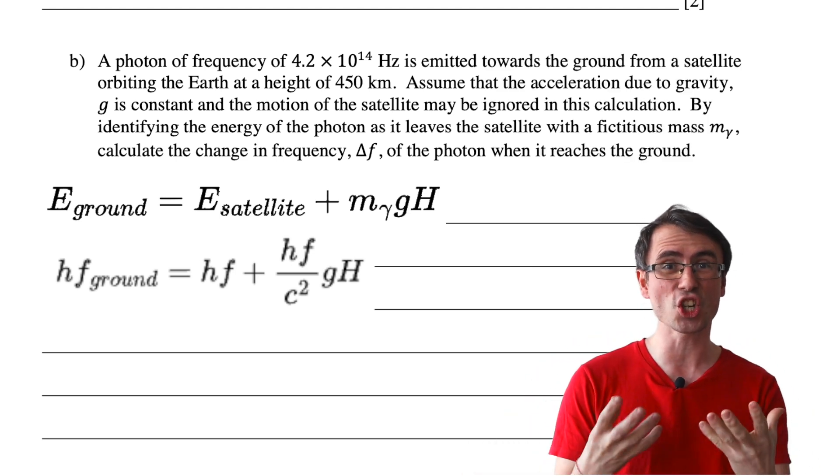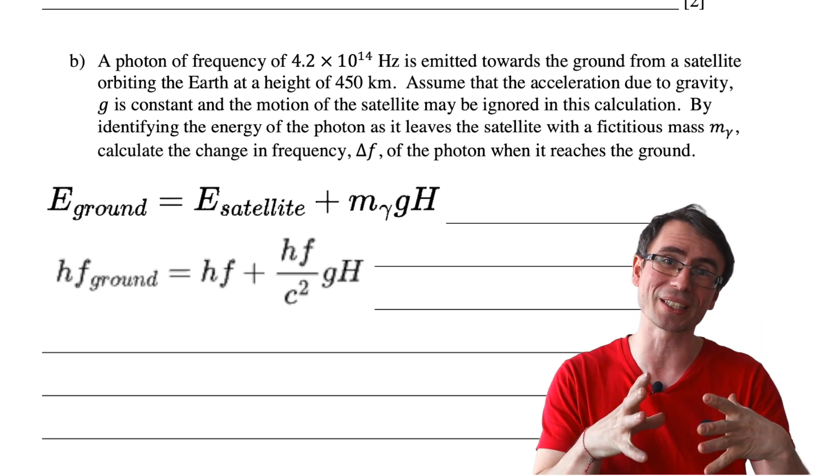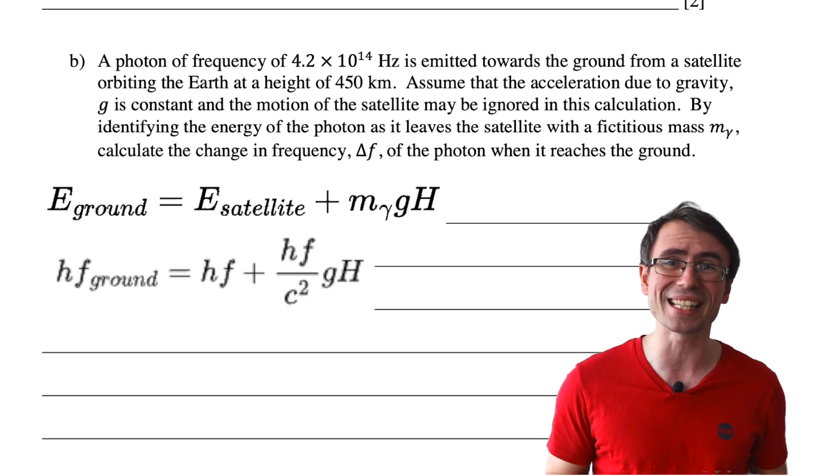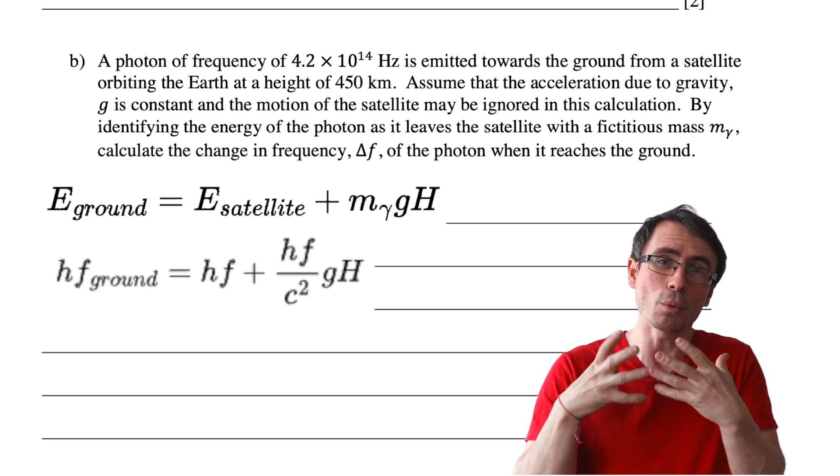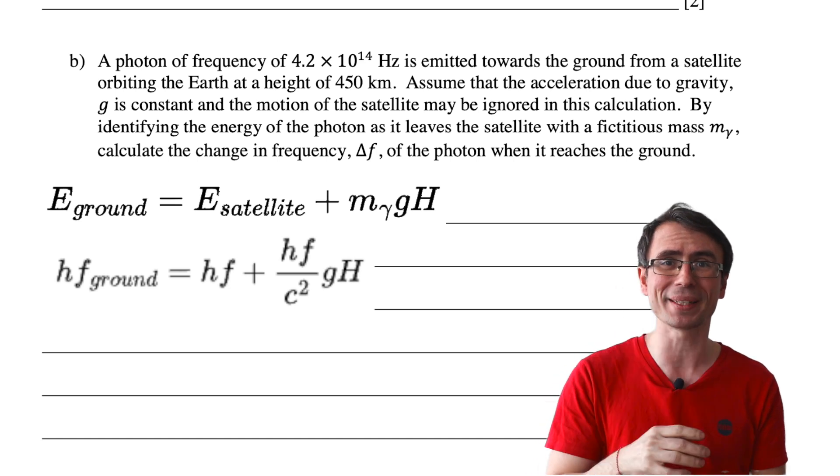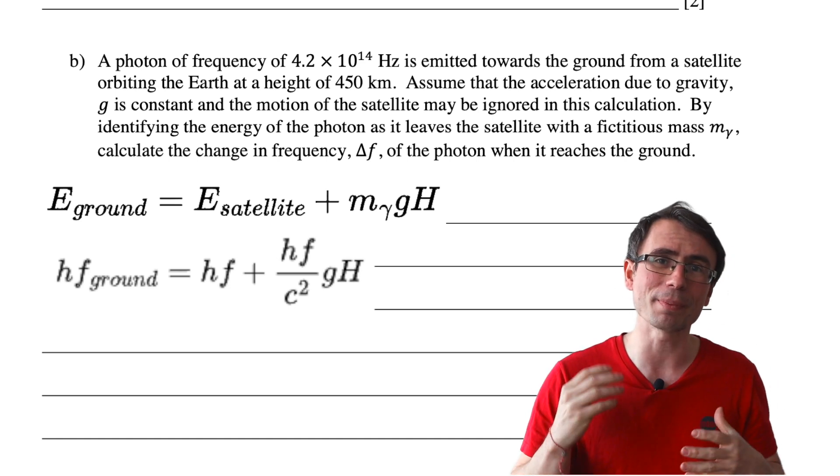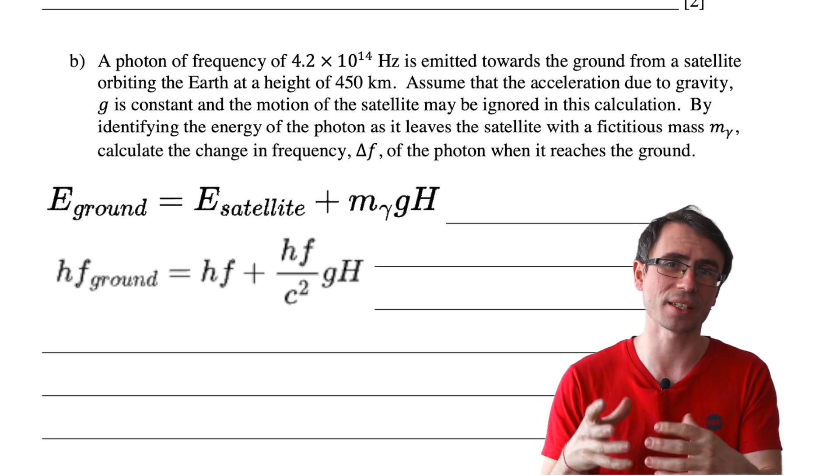So if the photon has changed its energy close to the ground, this means that its frequency must have changed. This will be equal to the sum of hf, which is the frequency high up in the satellite, plus the fictitious mass times g times the height.